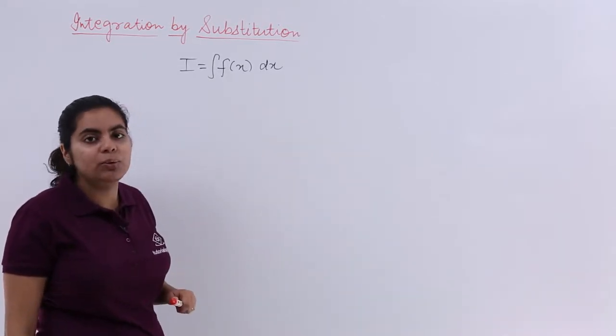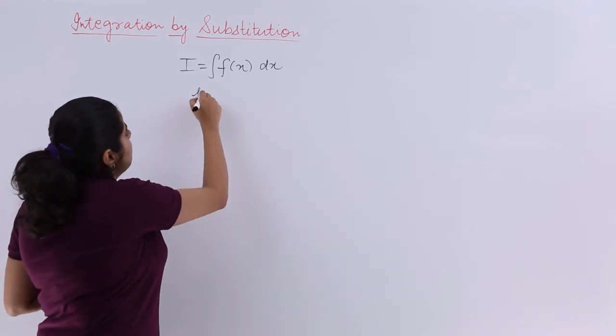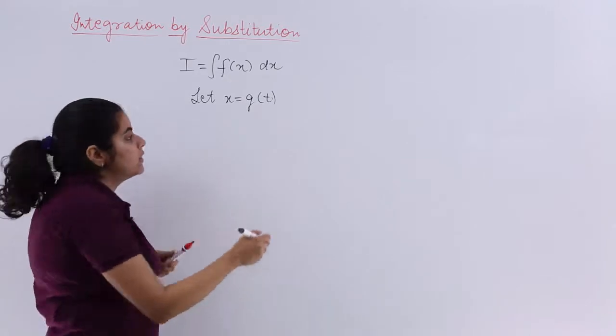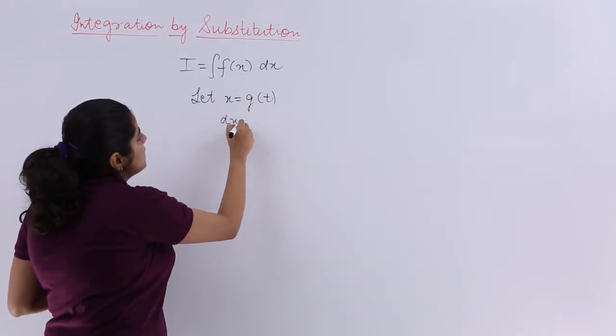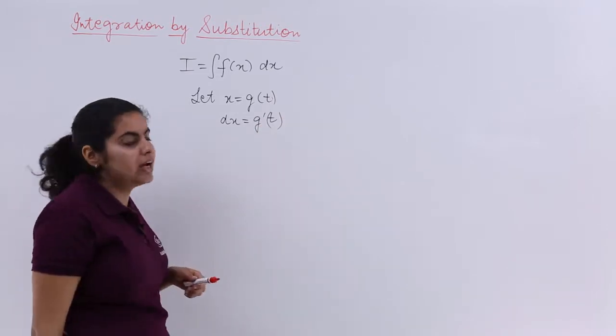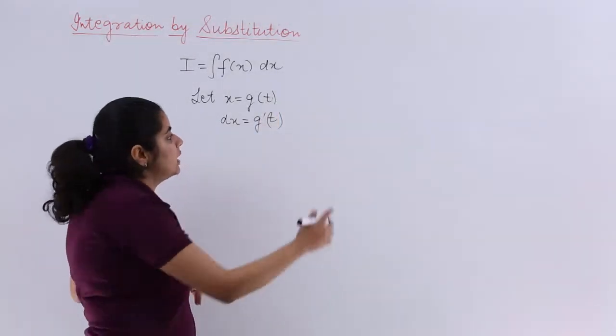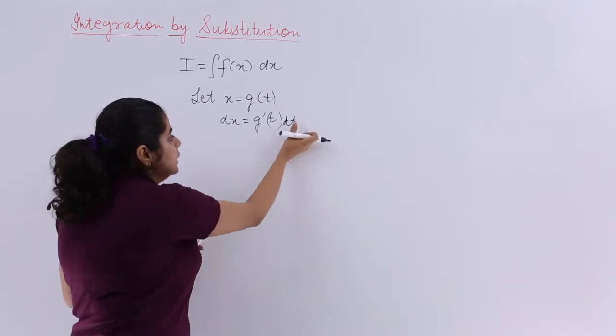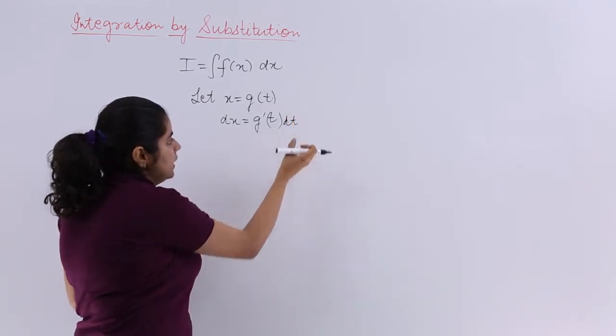What we will do in case of integration? We will assume, let x equal another function g(t). Then what is your dx? That is nothing but g'(t), and it has to be g'(t)dt. So g'(t)dt is what your dx is.